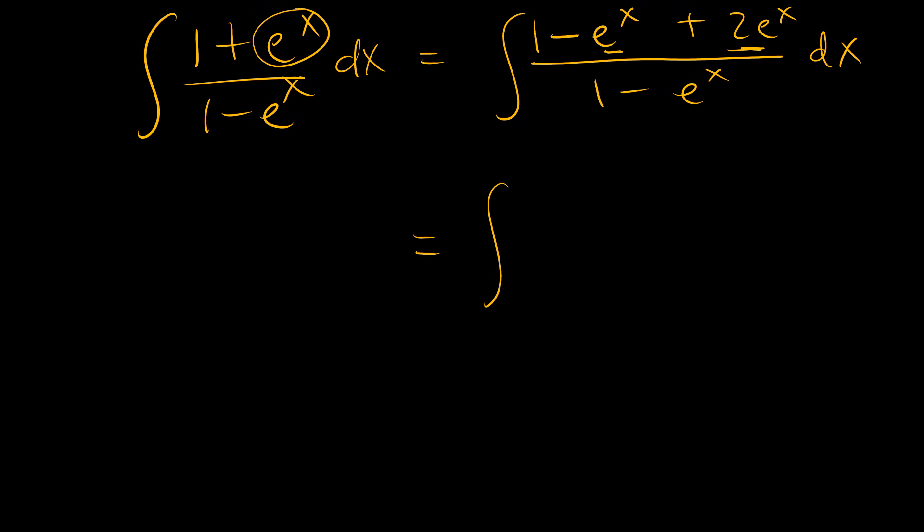And that means that we can have 1 minus e to the power x over 1 minus e to the power x plus 2e to the power x over 1 minus e to the power x dx. So, we have 1 plus 2e to the power x over 1 minus e to the power x.